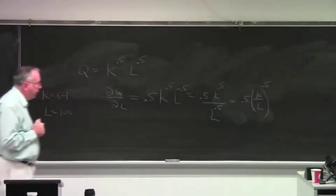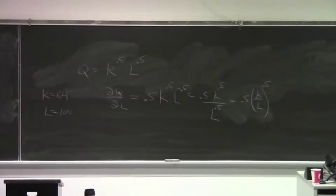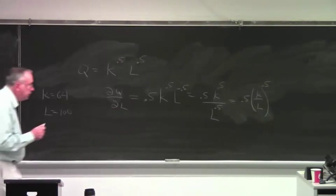And raising K over L to the 0.5 is the same thing as doing what? Square root. Square root. Okay. So, it's 0.5 times the square root of K over L.